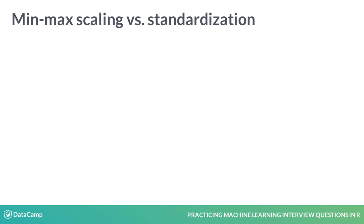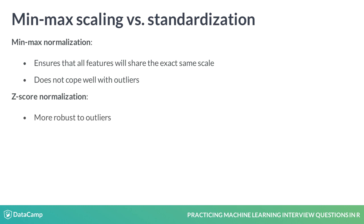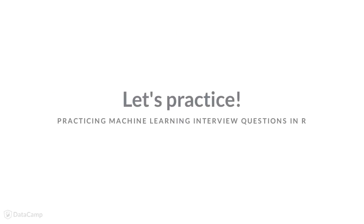To summarize, min-max normalization ensures that all features will share the exact same scale, but does not cope well with outliers. Z-score normalization, on the other hand, is more robust to outliers, but produces normalized values in different scales. Time for you to practice.